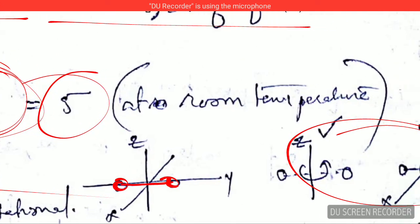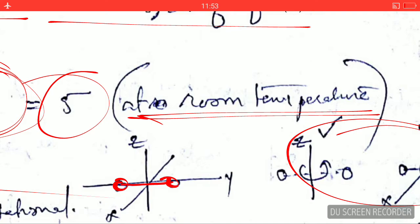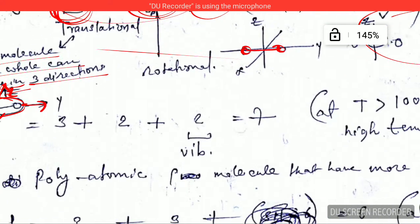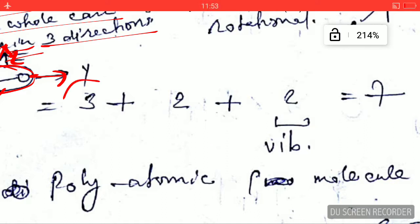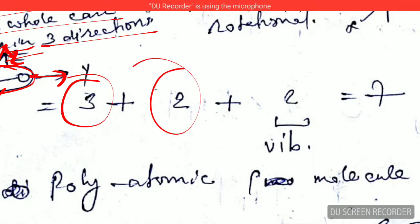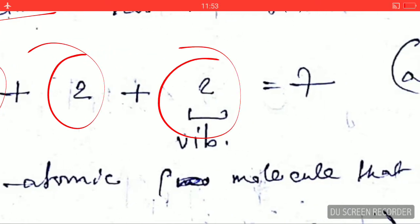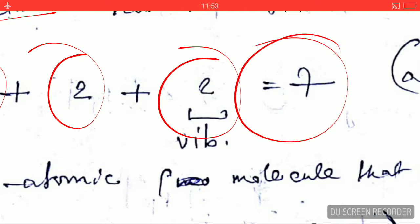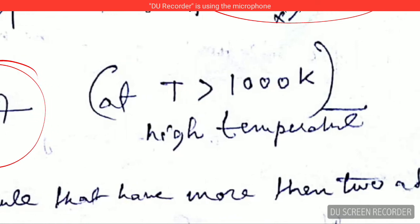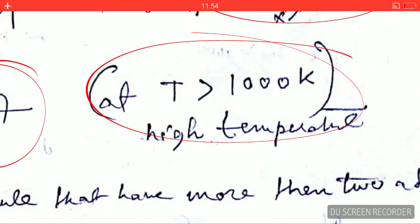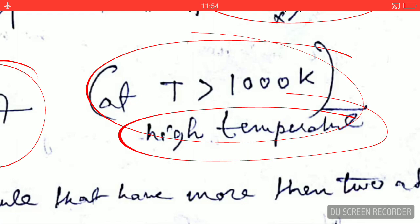At room temperature, the diatomic molecule has five degrees of freedom. But at high temperature — meaning above 1000 Kelvin — it will have three translational plus two rotational plus two vibrational degrees of freedom, giving a total of seven degrees of freedom.